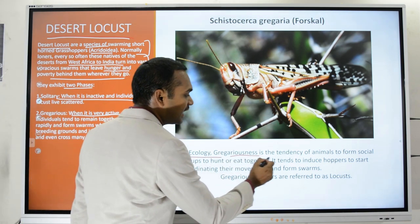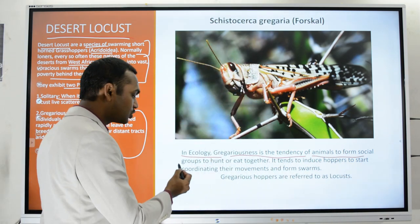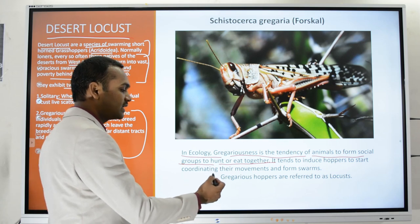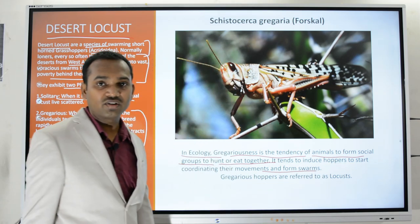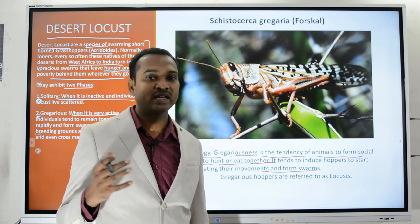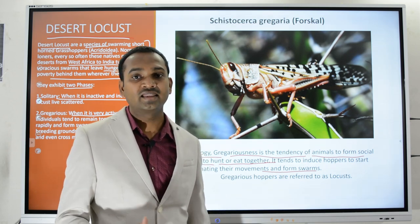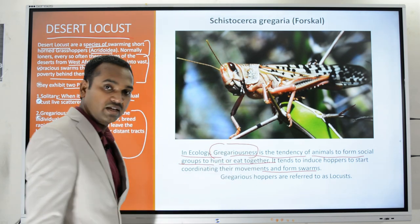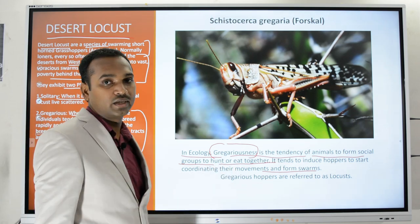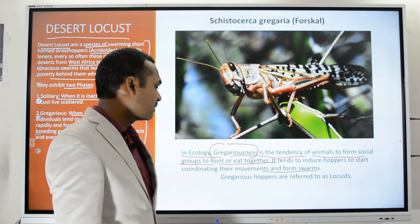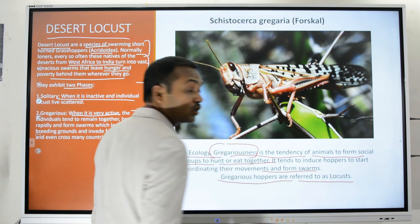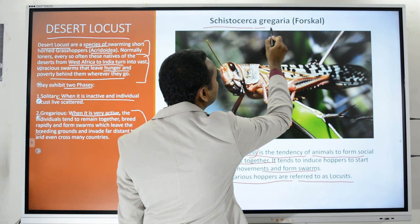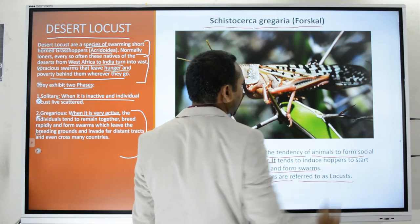In ecology, gregariousness is the tendency of animals to form social groups to hunt or eat together. It induces the hoppers to start coordinating their movements and form swarms. In a swarm, all locusts move in a synchronized fashion without hitting each other — a wonderful behavior called gregariousness. The scientific name of the desert locust is Schistocerca gregaria, also called fork-tailed locust.